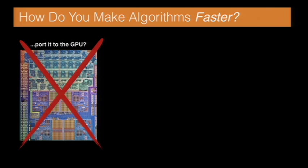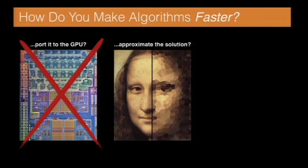So maybe a different answer is we could approximate the solution. Da Vinci could have saved himself a lot of trouble if he'd drawn the Mona Lisa as just a few blobs instead of all this detailed stuff on the left. But again, we haven't really made the algorithm faster. We've just computed less of the solution.